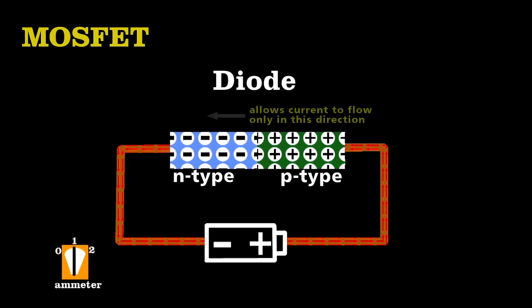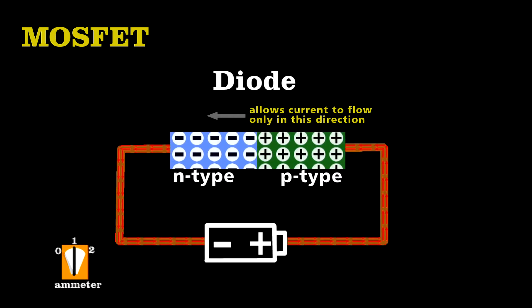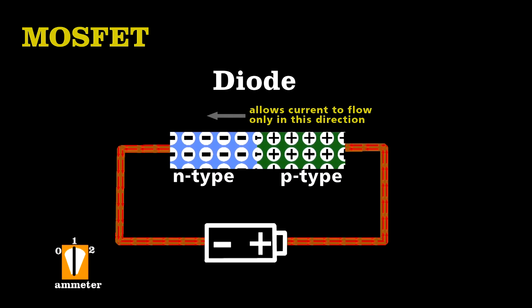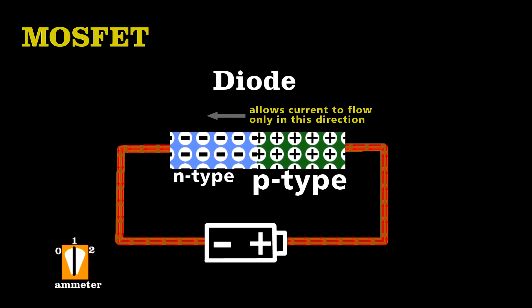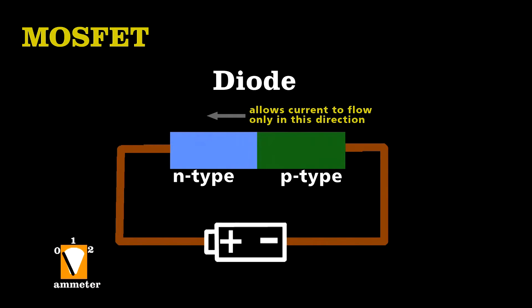Recall that a diode allows current to pass in only one direction, because it uses two types of semiconductors, a type that uses negative charge carriers, and one that uses positive charge carriers. Flip that battery, and the flow of charge stops.